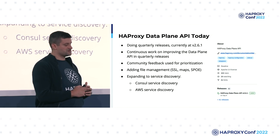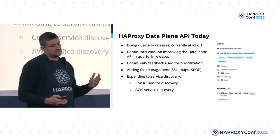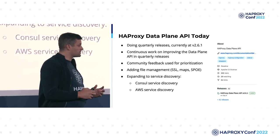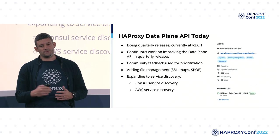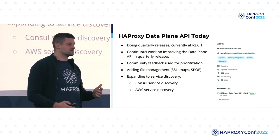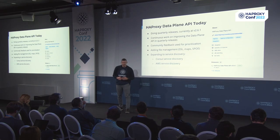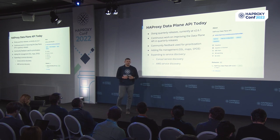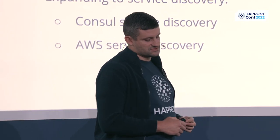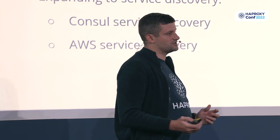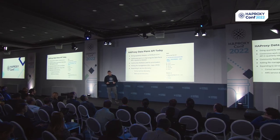In that time, we've extended the runtime API to support things like ACLs, maps, SSL certificates, and more. By popular demand, we added file management — so now you can use Data Plane API to ship files to your HA Proxy, like SSL certificates, map files, SPOE configurations, and the like. The Data Plane API is also now used by many for service discovery, as we've implemented Consul service discovery and AWS service discovery based on EC2 instances and their tags.